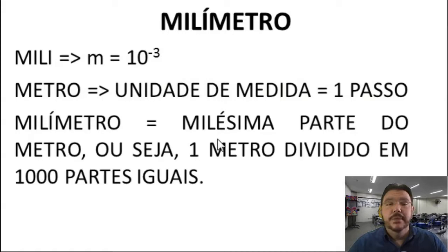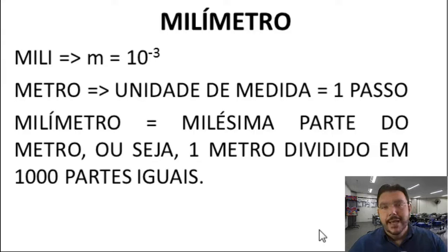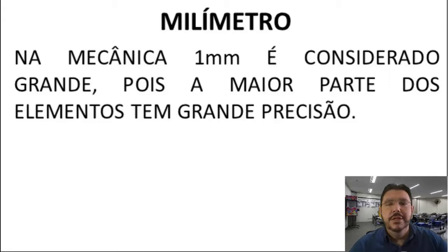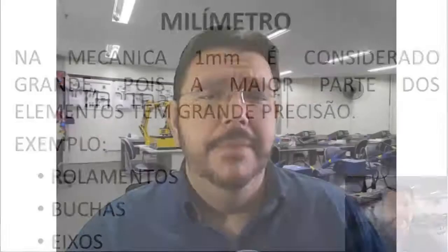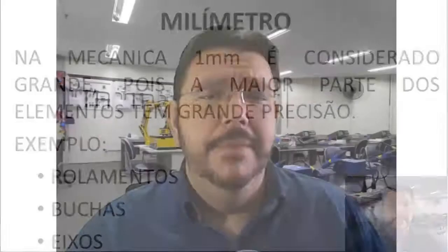Se você pegar uma régua, o milímetro é aquele risquinho — mil risquinhos equivalem a um metro. Na mecânica, um milímetro é algo gigantesco. A maior parte dos elementos tem grandes precisões. Se você pegar rolamentos, buchas, eixos dentro da mecânica, uma diferença de um milímetro é algo enorme.